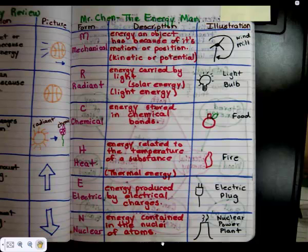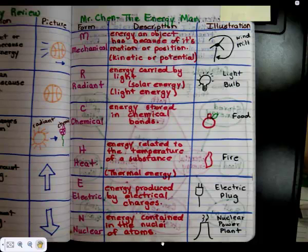In your ISN, you are going to be completing some notes that have the forms of energy, a description, and an illustration that goes with it. We call it Mr. Chen, the energy man. Mr. Chen is a way to help you remember the six types of energy.